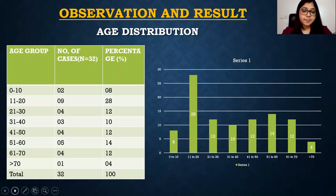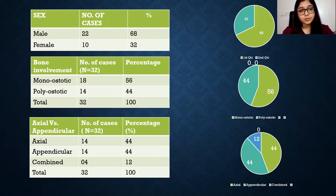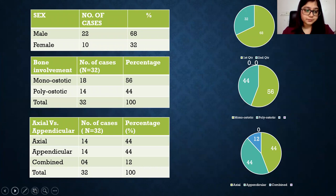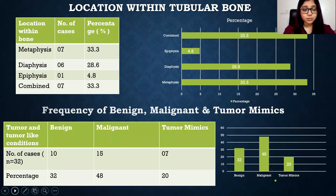Observations and results: the maximum age group affected was 11 to 20 years. Males were more affected than females. Most bone involvement was monoostotic, and axial and appendicular skeleton were equally involved. Most tumor locations were in the metaphyseal region, followed by diaphysis, and most of the tumors were malignant. There were also seven cases of tumor mimics.